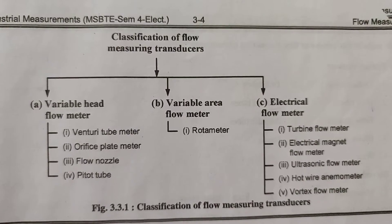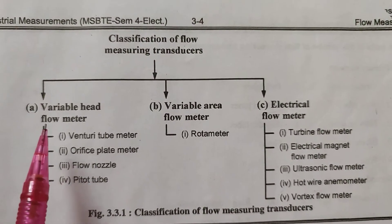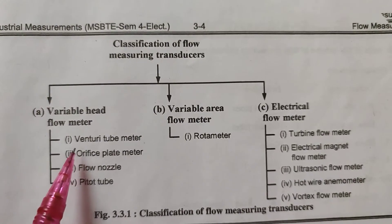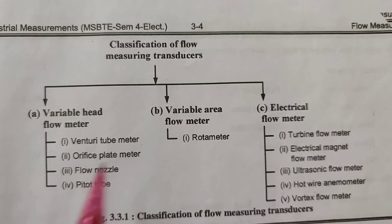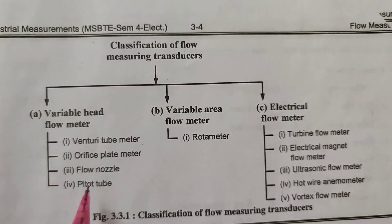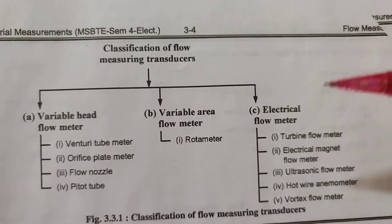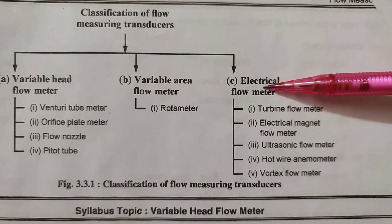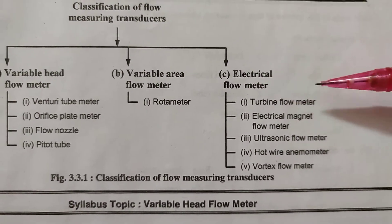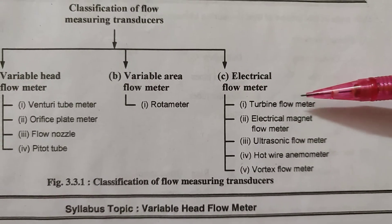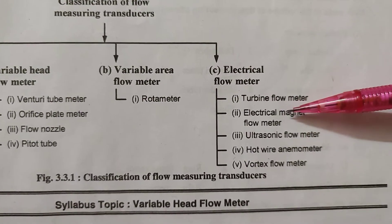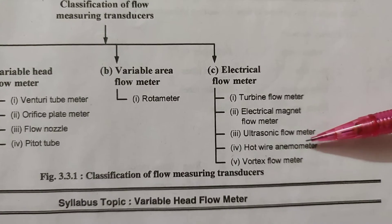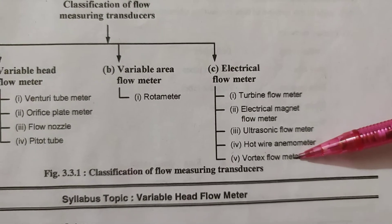Classification of flow measuring transducers: First, variable head flow meters — which include Venturi tube, orifice plate meter, flow nozzle, and Pitot tube. Second, variable area flow meter — the rotameter. Third, electrical flow meters — turbine flow meter, electromagnetic flow meter, ultrasonic flow meter, hot wire anemometer, and vortex flow meter.